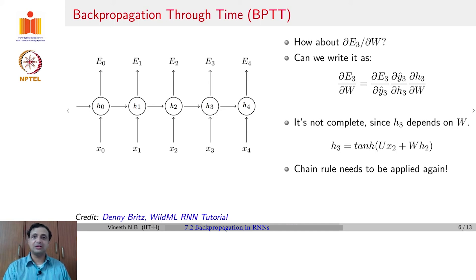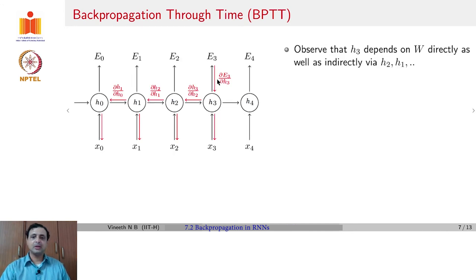Why did we not need this with V? Because V did not have this problem because it was directly connecting H to the error. How do we complete this? H_3 depends on W via H_2, H_1, and all other earlier hidden states. Which means ∂E_3/∂W can be written as k going from 0 to 3, ∂E_3/∂Y_3 hat times ∂Y_3 hat/∂H_3 times ∂H_3/∂H_k where k would go from 0 to 3, times ∂H_k/∂W.